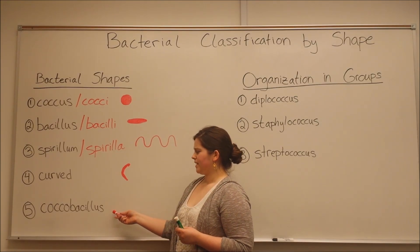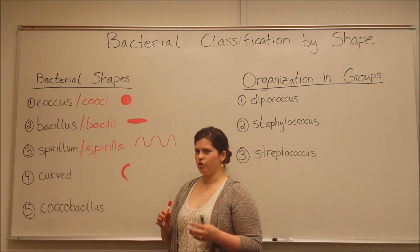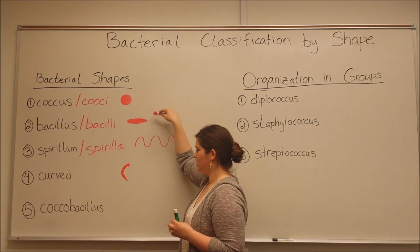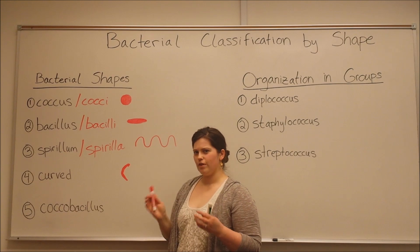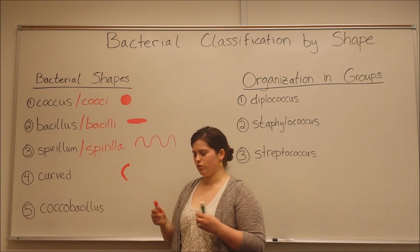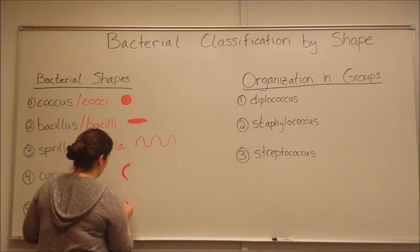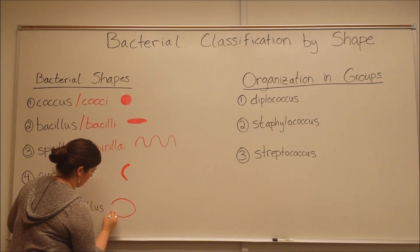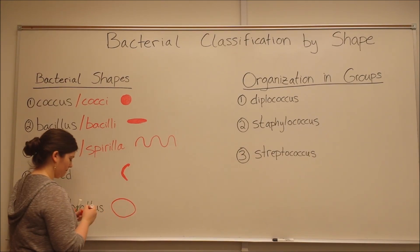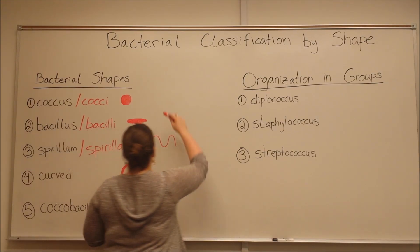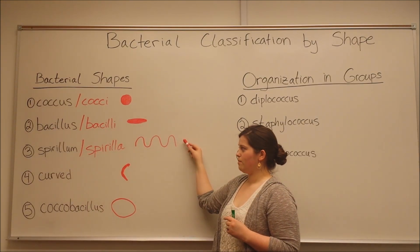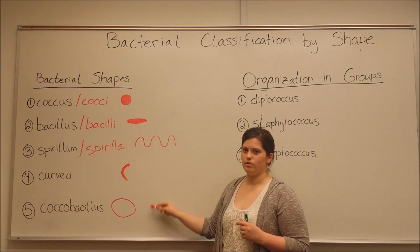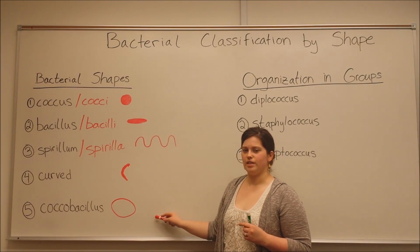Then there are some bacteria that have a shape somewhat between cocci and bacilli — so they're sort of spherical and sort of rod-shaped. Now these top three shapes are the most common types of bacteria, but you do see these other shapes represented as well.